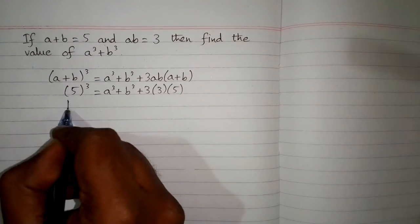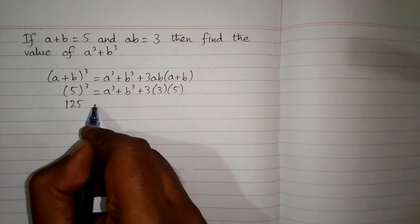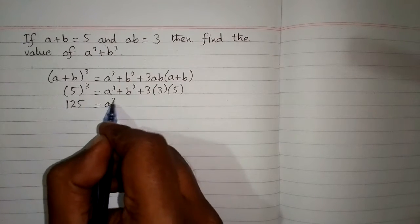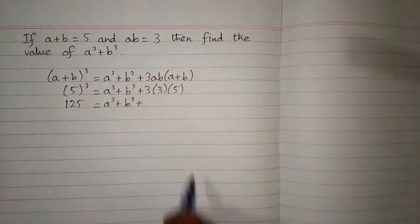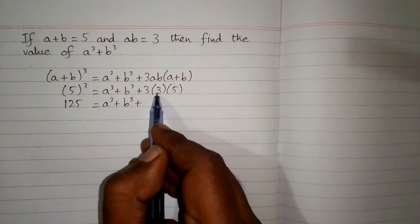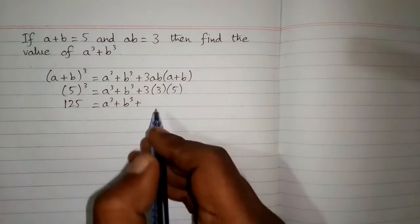Now 5 cube is 125, then a cube plus b cube plus, now 3 times 3 is 9, and 9 times 5 is 45.